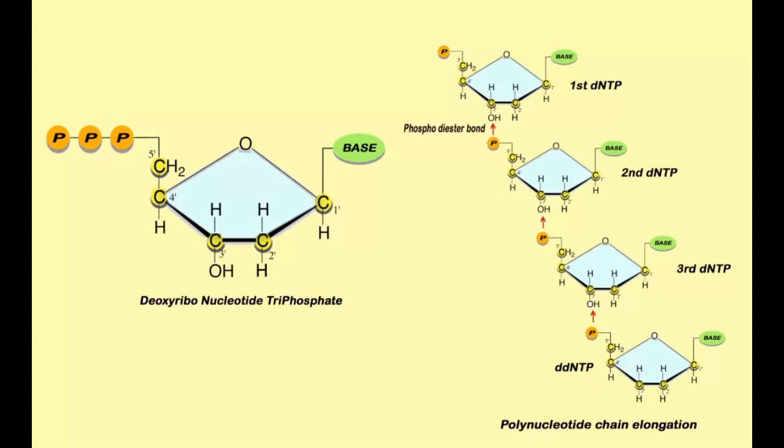But what will be the problem? After the attachment of ddNTP in the chain, when the next nucleotide tries to add in the chain, it will not be able to attach. Why? Because the OH group is missing. See, ddNTP doesn't have any OH group at 3'. So the next NTP, the normal dNTP, will not be able to get attached to this. And the result will be that the chain will be terminated. That is why this is known as chain termination method.